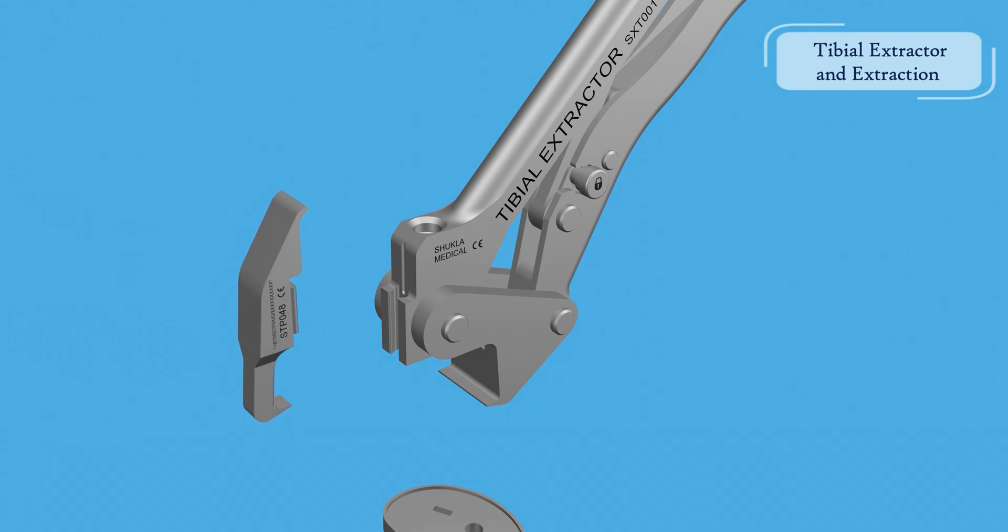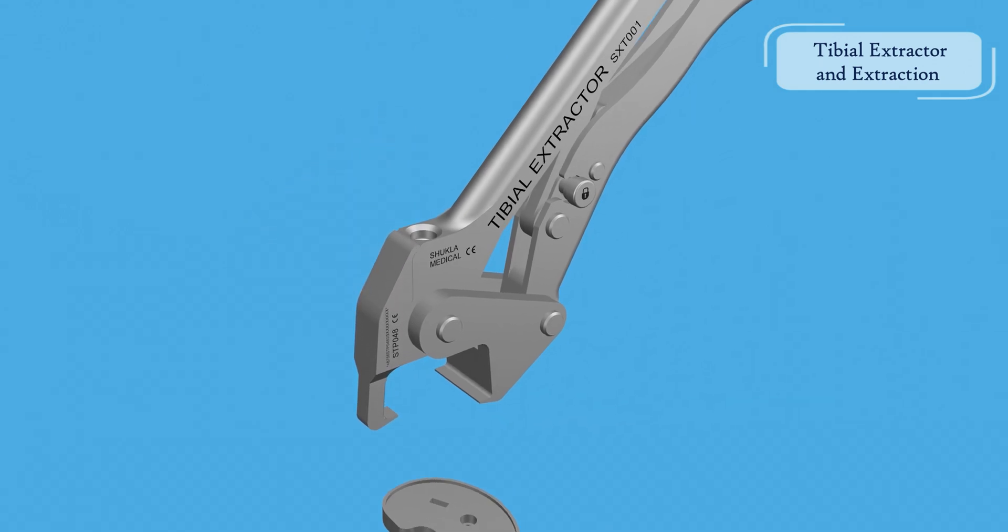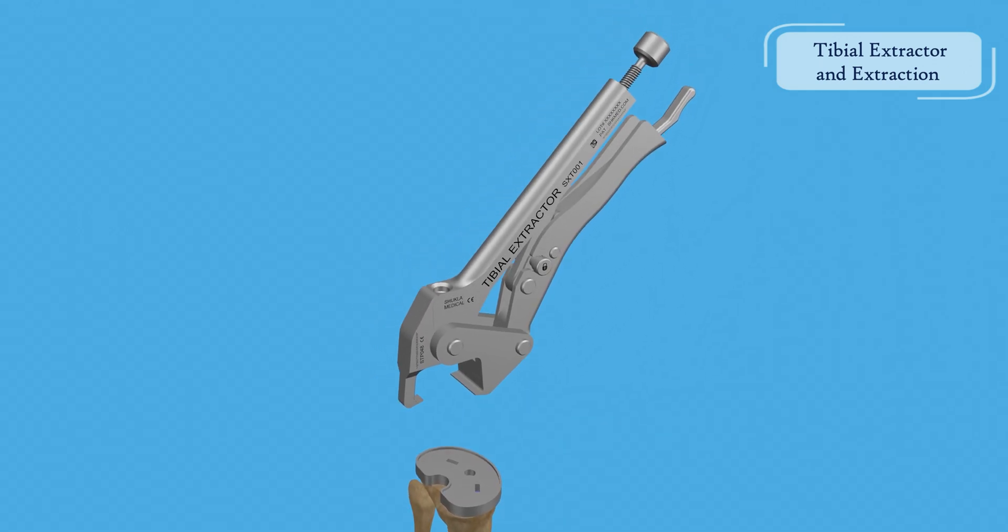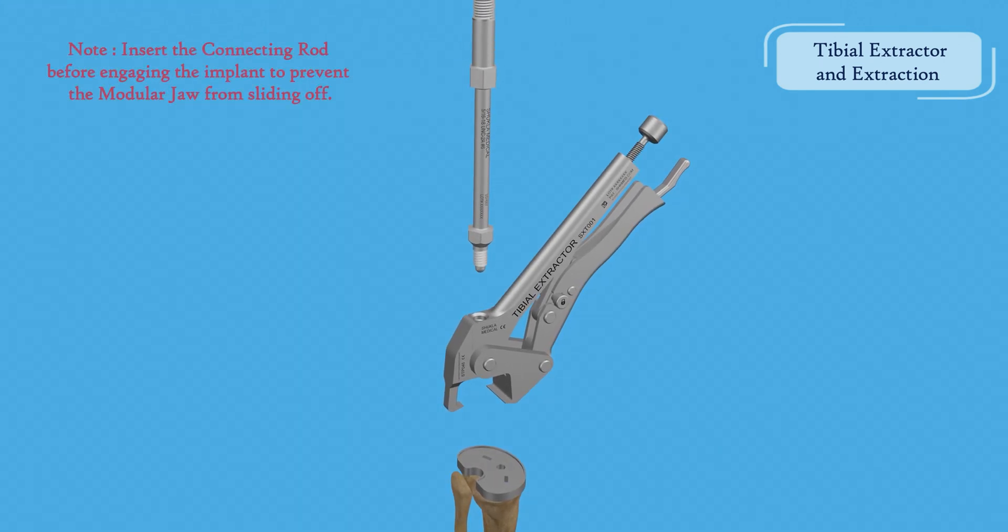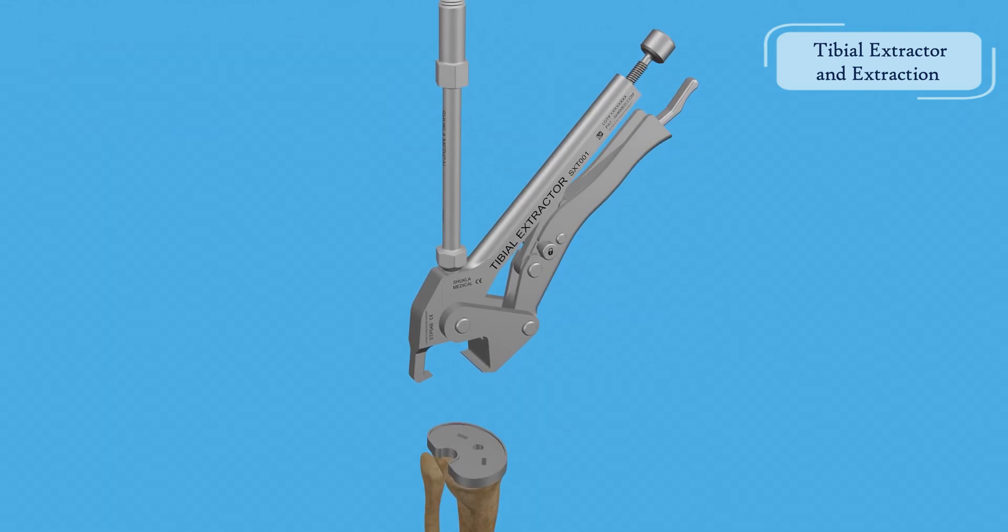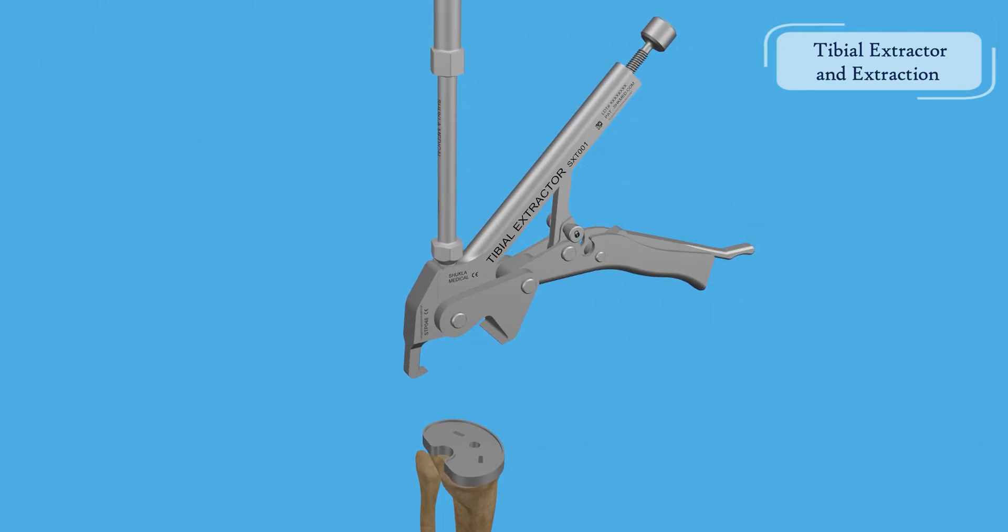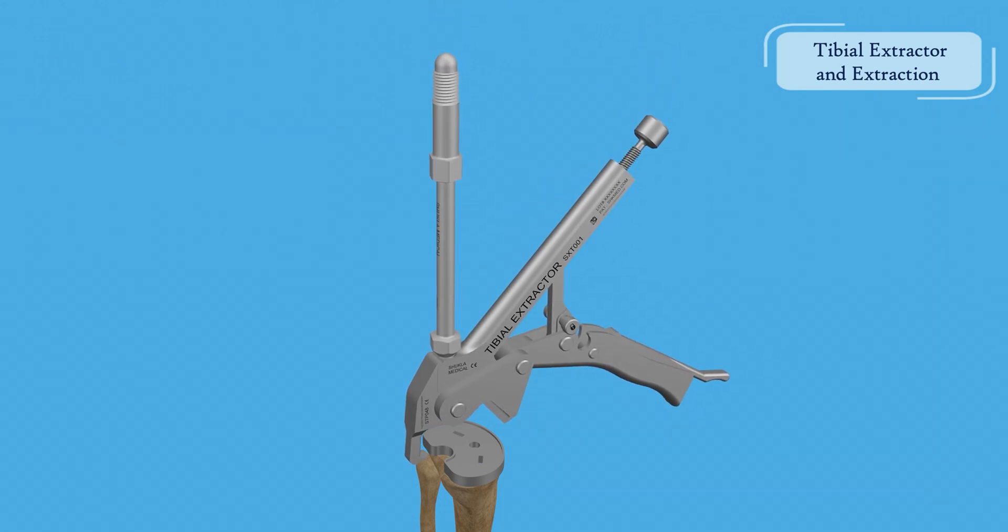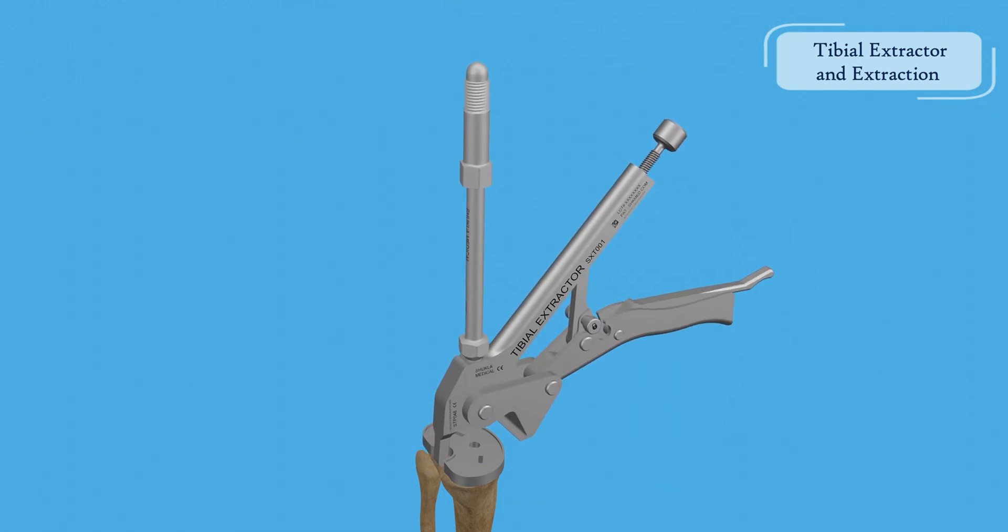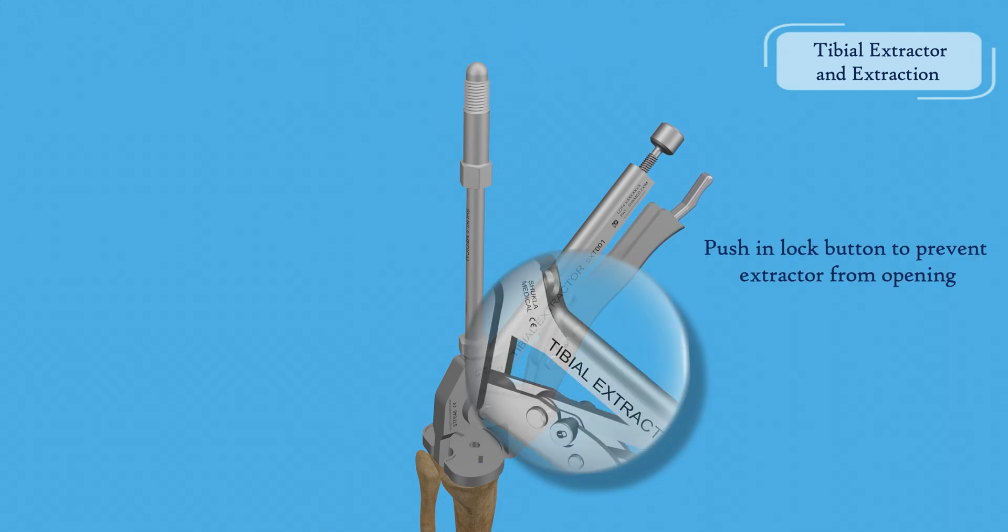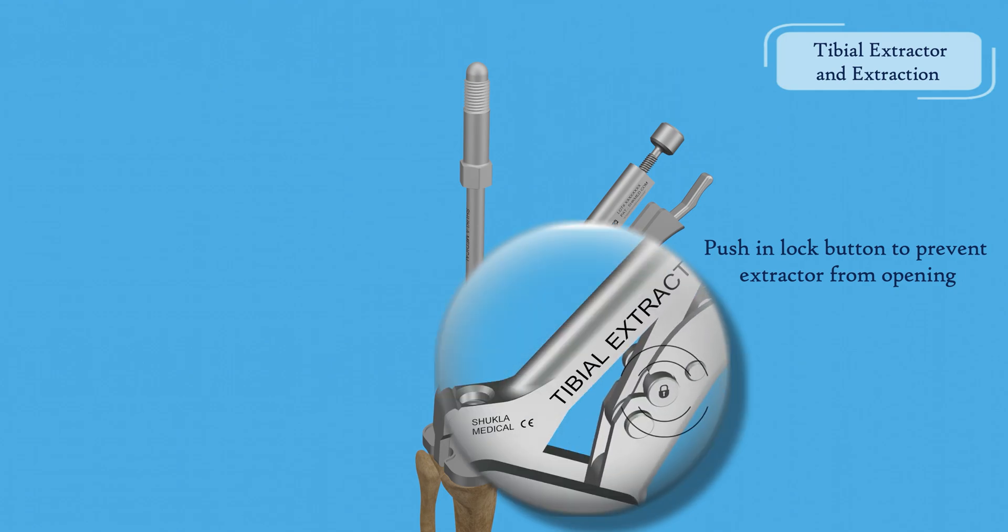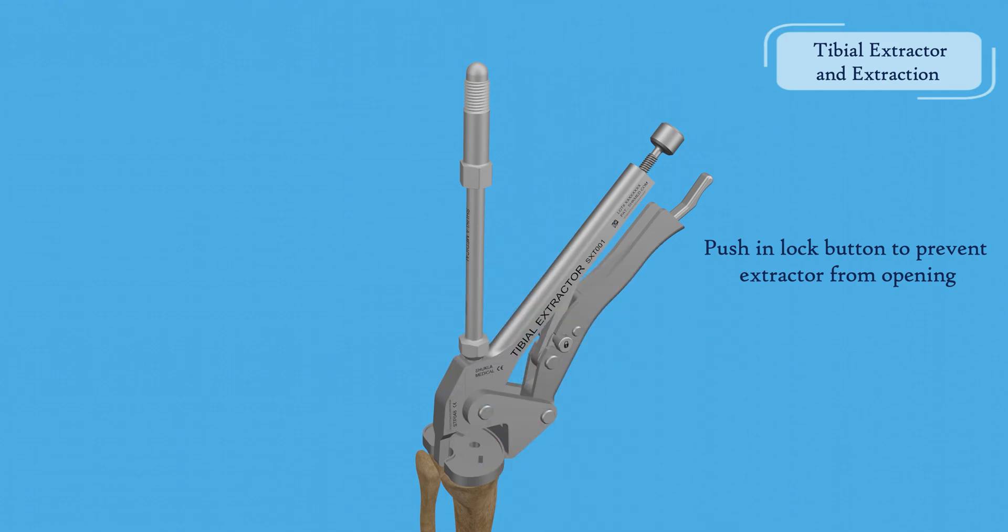A modular jaw enables quick replacement after damage or overuse. Screw the connecting rod onto the extractor. Adjust the screw until the jaw clicks securely. Lock the jaws by pressing the side lock button.